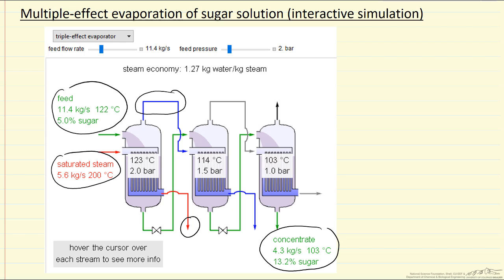We move from left to right with the sugar solution in green. We feed the liquid into the second effect at higher sugar concentration, then into the third effect at even higher concentration, ending up with 13.2%.